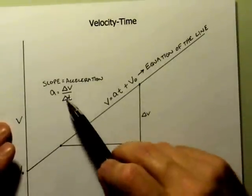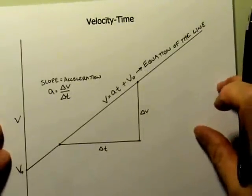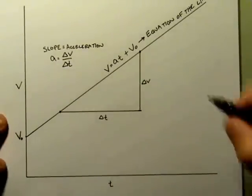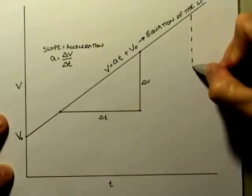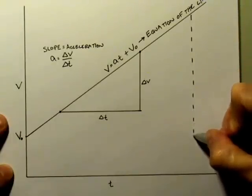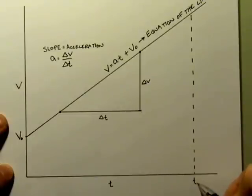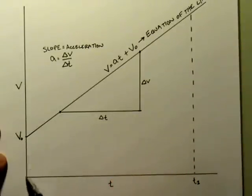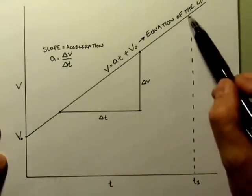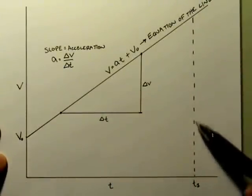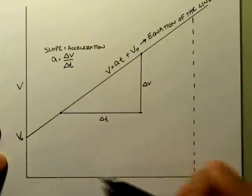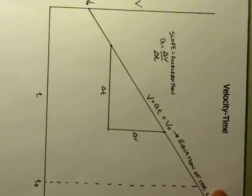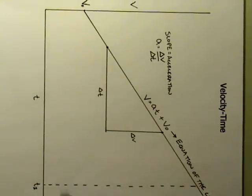This graph also lets us look at another property we didn't examine on the last graph: the area underneath it. When I close off the area at T₂, think about what shape this graph forms. It's not a triangle, because there are four sides. If you turn the graph on its side, it might be easier to recognize that this is the shape of a trapezoid — two parallel lines and two non-parallel lines.